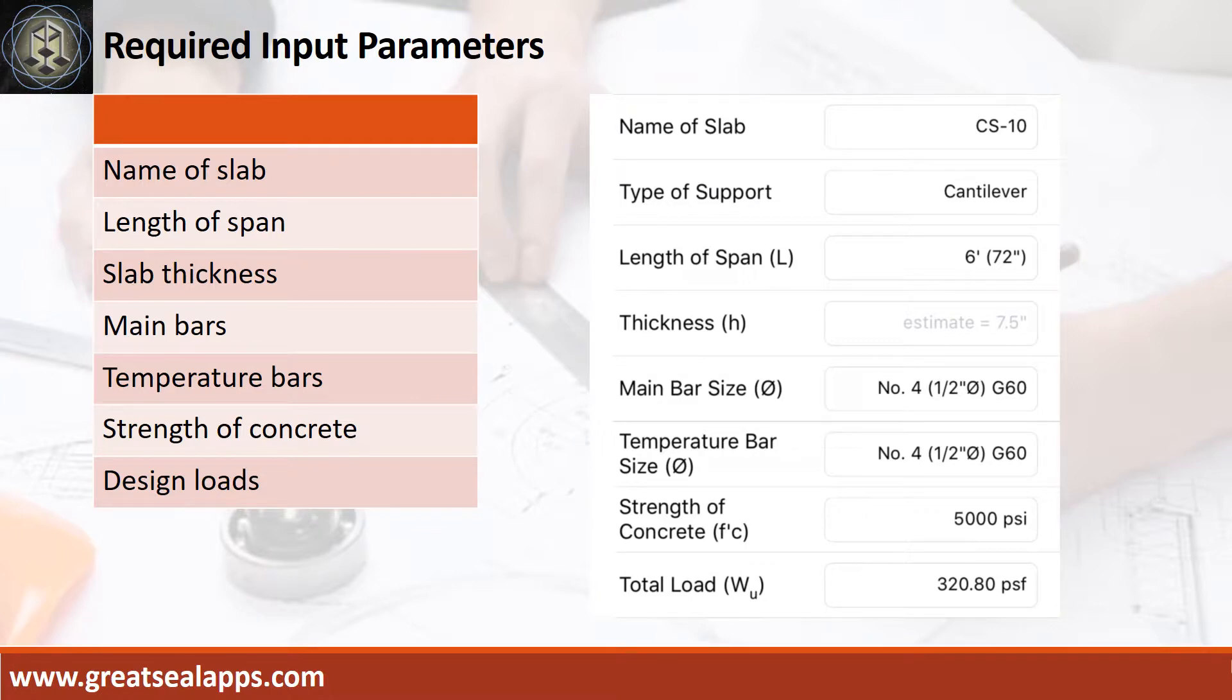Enumerate input parameters required: Name of slab CS10, Type of support cantilever, length of span 6 feet, slab thickness 7.5 inches, main bars and temperature bars ½ inch diameter at grade 60, strength of concrete 5000 psi, and total load 320.8 pounds per foot.